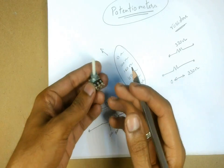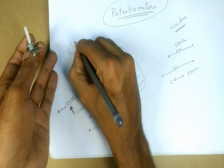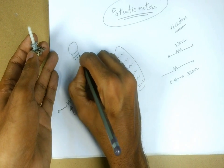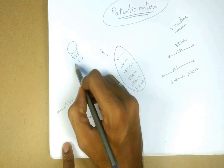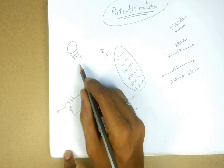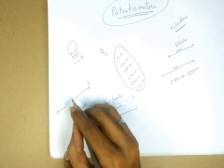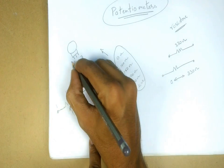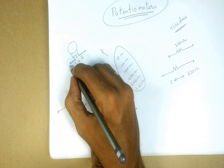A potentiometer like this will have 3 pins shown like this. Let's mark the pins as 1, 2, and 3. If you consider this diagram, the first end will be pin 1 and the other end will be pin 3, and the second pin will be the wiper pin. The resistance between the first and third pins will always be constant and won't be changing. Whatever you measure between pins 1 and 3 will have a constant resistance.